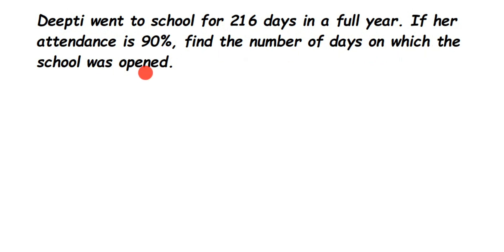What is given here: Deepti went to school for 216 days, and this 216 days is actually 90% of her attendance. We have to find out the total number of days the school was open. The total number of days the school was open is the same as the total attendance — she just went for 90%. So this 216 days is nothing but 90% of the total number of days the school was working, that is, the school was open.